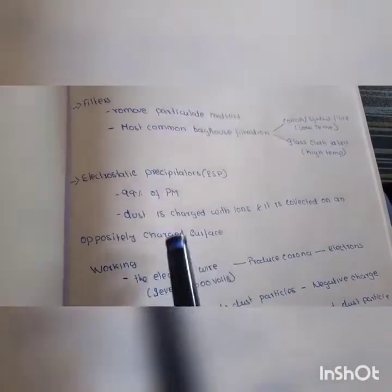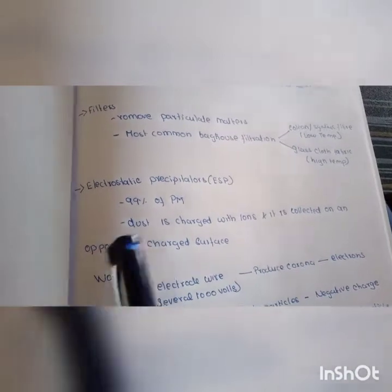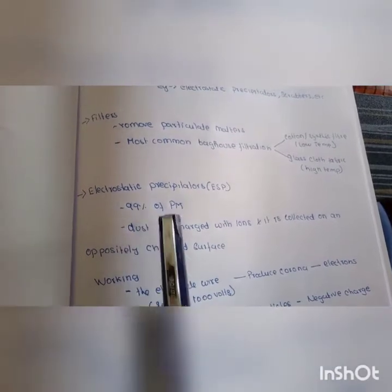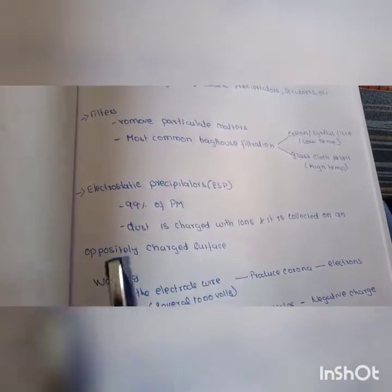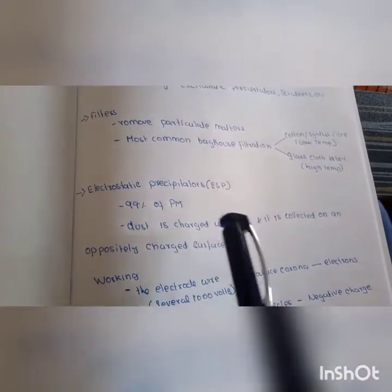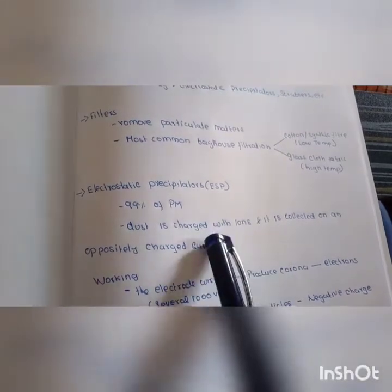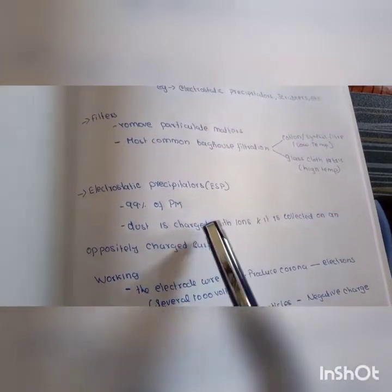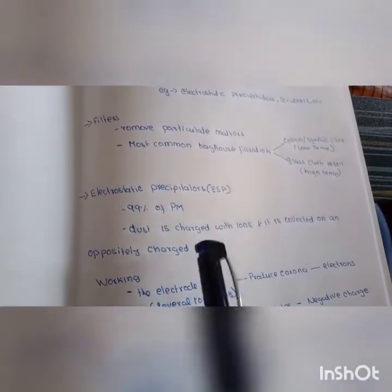Electrostatic precipitator. Ions are charged particles to remove particulate matter. 99% of particulate matter removed, including dust. Ions are charged with opposite charge on the ion surface to attract and remove dust.